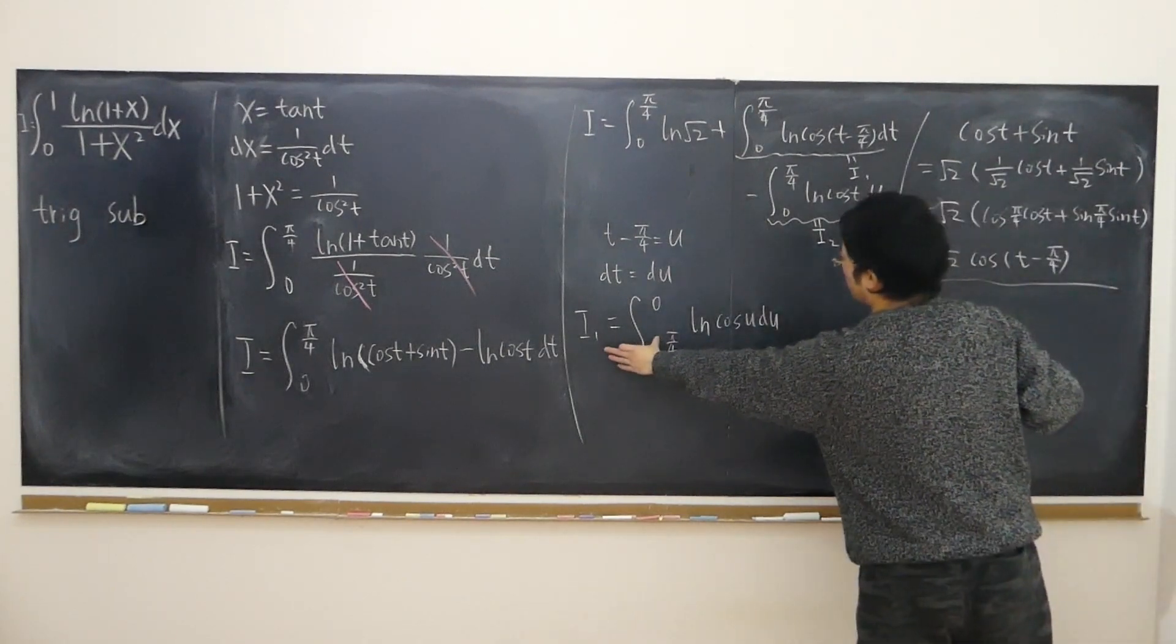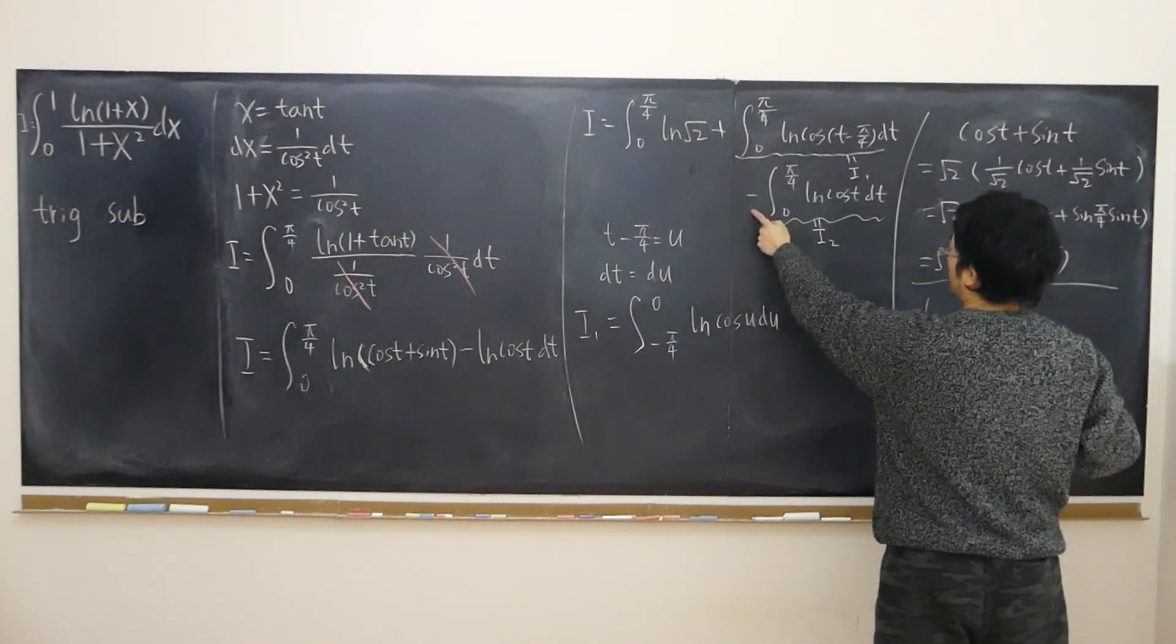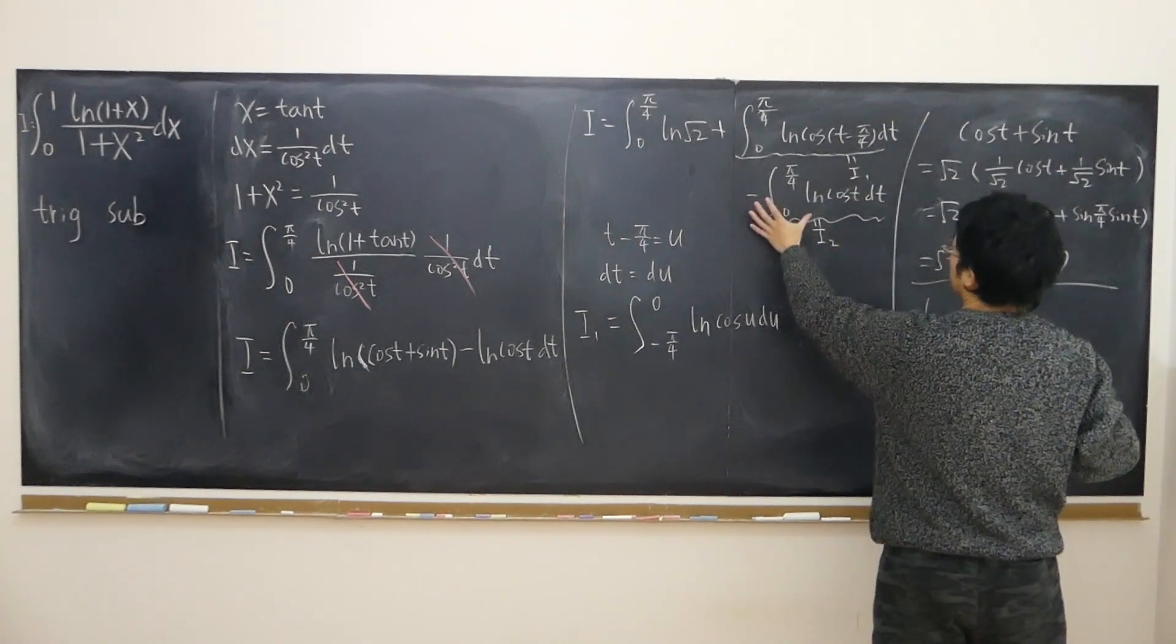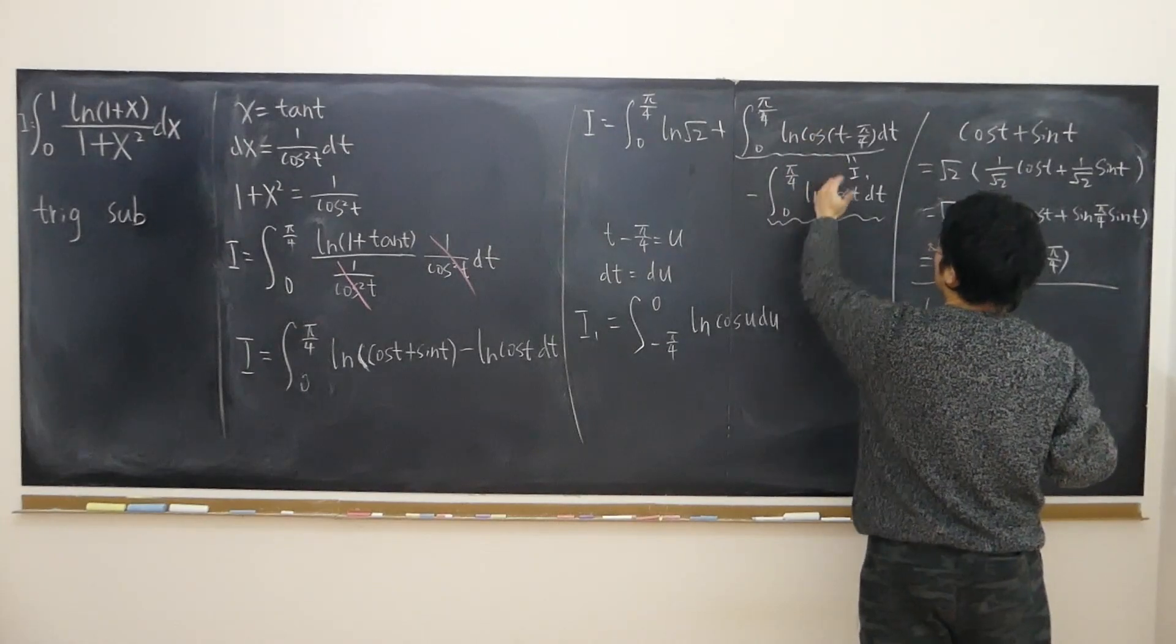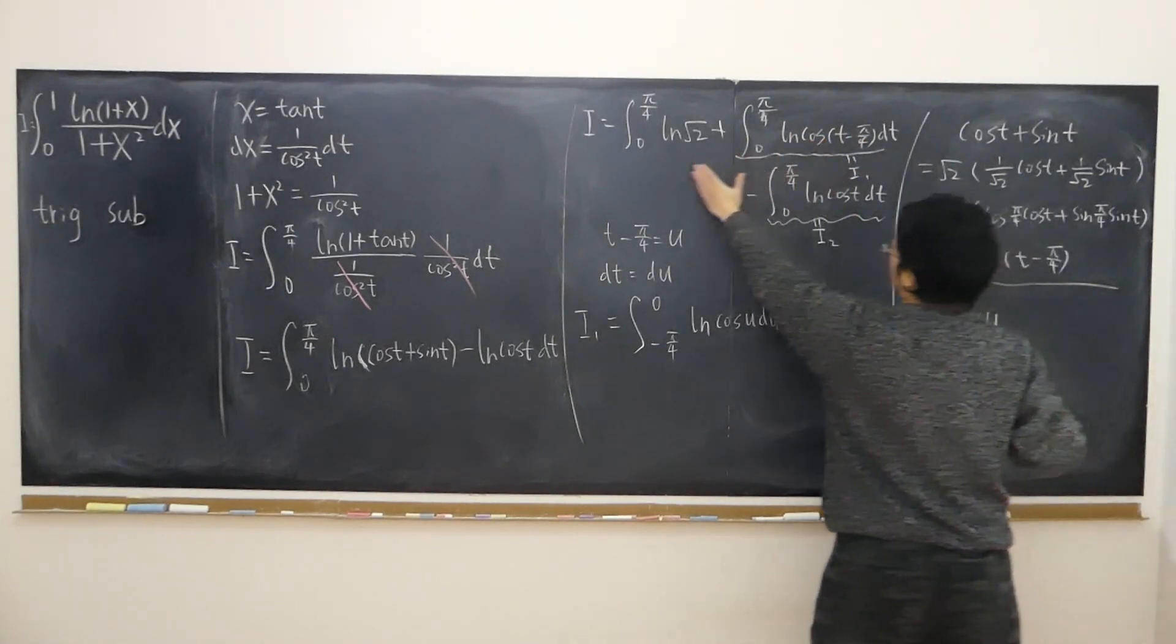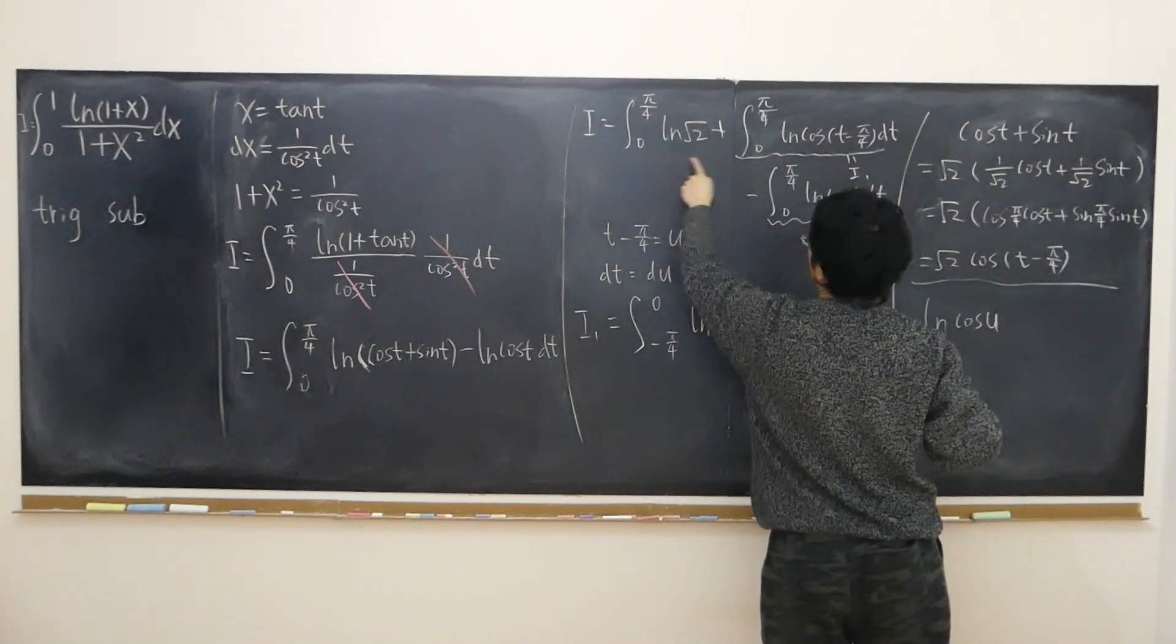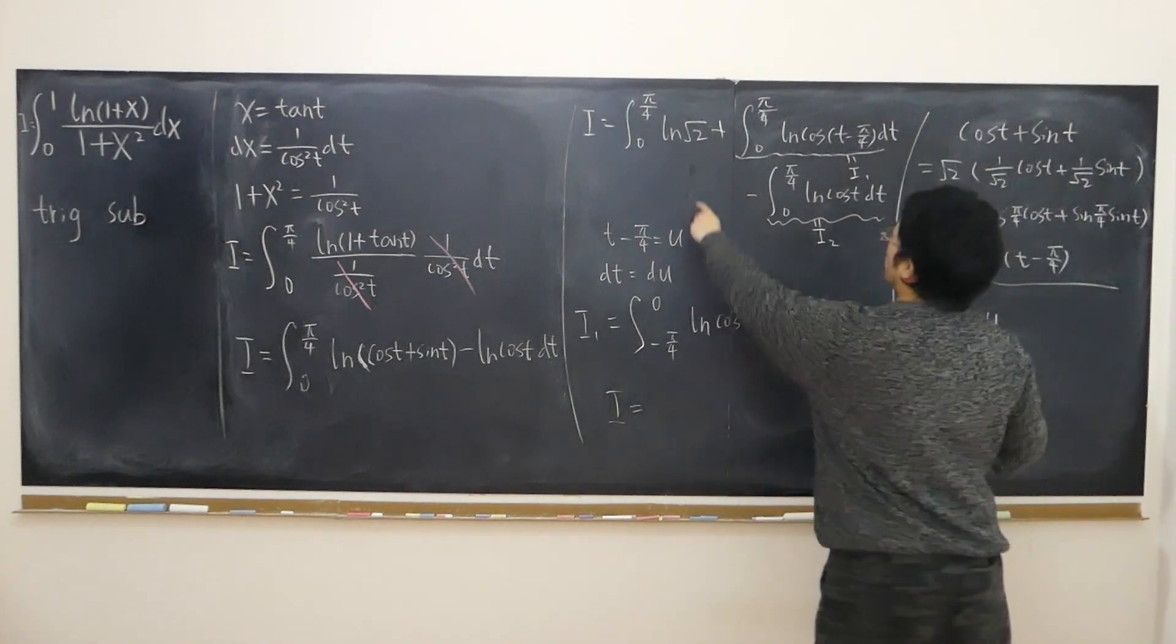So that means i1, i2, but minus i2. i1 minus i2. The same value, minus minus plus minus become 0. Automatically cancel out. So i is in fact only this part.